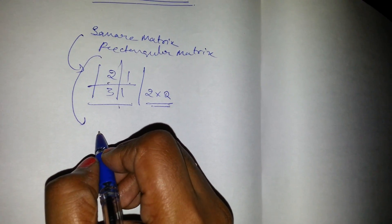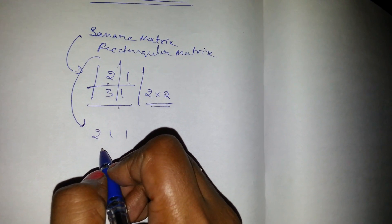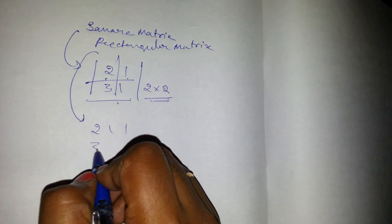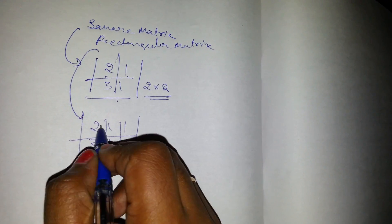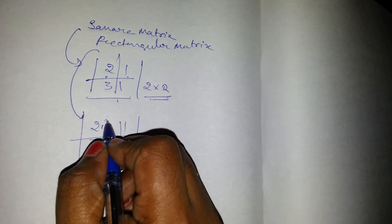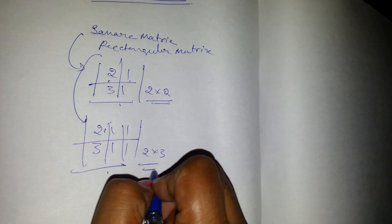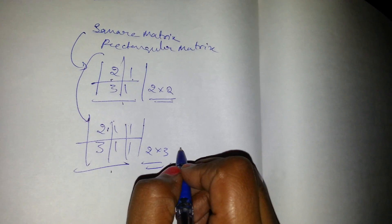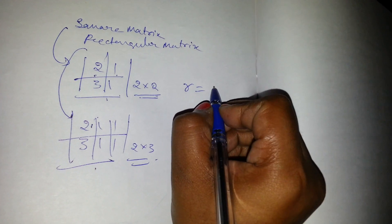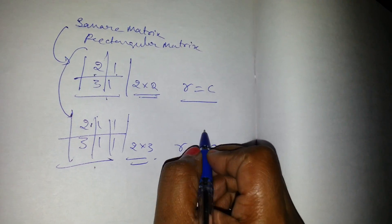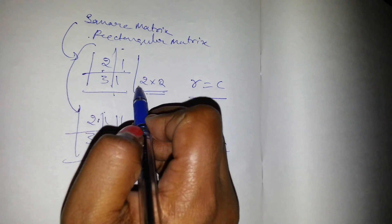A rectangular matrix is one where the number of rows is not equal to the number of columns. Here there are 3 columns and 2 rows — 1, 2, 1, 2, 3 — so it is a 2 by 3 matrix. Here the number of rows is not equal to the number of columns. These are called the square matrix and the rectangular matrix.